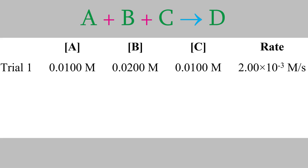Suppose we measure delta concentration and delta T to calculate the rate for this trial, and we get a rate of 2.00 times 10 to the minus 3 molars per second. What can we do with this information? Remember, what we're trying to do is learn how the concentrations of the reactants affect the rate of the reaction. So what we need to do next is perform a second trial. But this time, we'll change the concentrations and see what happens to the rate. But we don't want to change all three concentrations — if we do that, we won't be able to tell what effect each of the three changes had on the rate. Instead, we'll only change one concentration and leave the other two alone.